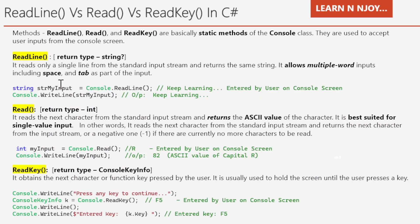Let's understand it with the help of an example. Here, I have written a Console.ReadLine statement that reads text from the console screen and returns it, and I am storing the read value in a string variable named strMyInput. So I have written: string strMyInput = Console.ReadLine(). Finally, I am printing that value into the console window. If the user enters 'keep learning', Console.ReadLine reads it, we store it in strMyInput, and that value gets printed — 'keep learning' — as shown in the output. Whatever the user types into the console, the same output is captured by the ReadLine statement.